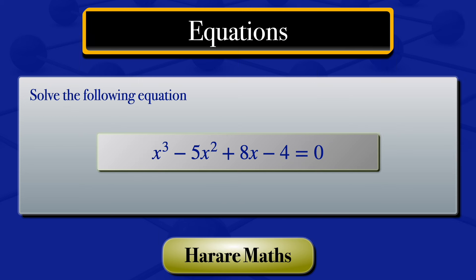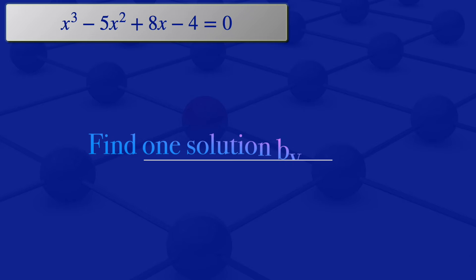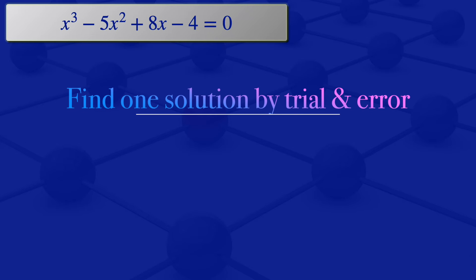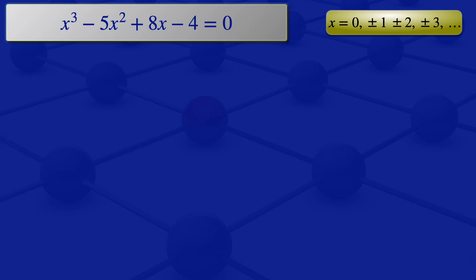In this video I'm going to solve the cubic equation x cubed minus 5x squared plus 8x minus 4 equals 0. To find its solutions, I'll try to find one solution by trial and error. For trial and error we'll be looking at values of x which are 0, plus or minus 1, plus or minus 2, plus or minus 3, and so on. We try to substitute them into this equation and see if they satisfy it.